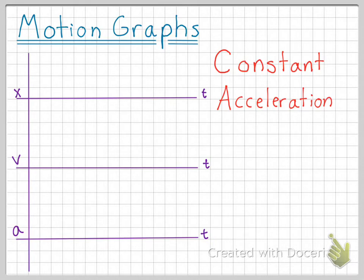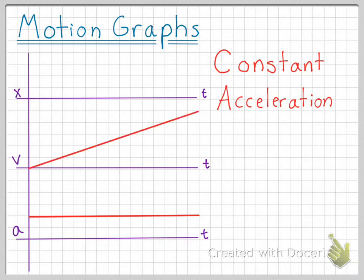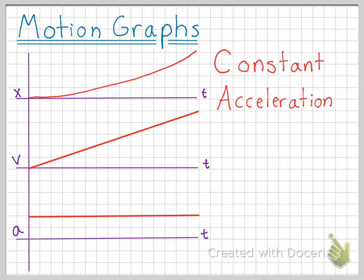The next graph is the constant acceleration graph, which tells us that the acceleration is constant and doesn't change. This is a non-zero acceleration, so our acceleration versus time graph will look like this. Since we have a constant acceleration, our velocity is constantly increasing, so the velocity versus time graph will show a straight, steadily increasing sloped line. At the beginning of this time frame, we won't cover much distance because we have a very small velocity, so our position versus time graph has a small slope at the beginning. After time, the object travels faster with a larger velocity towards the end, covering more distance, and the position versus time graph curves upward.